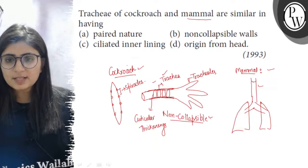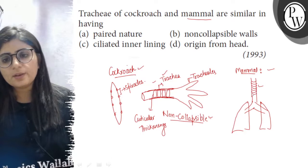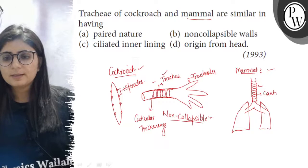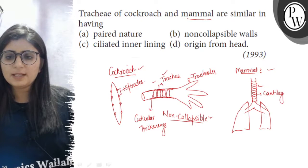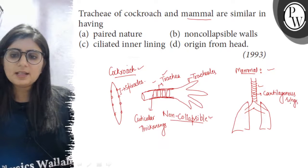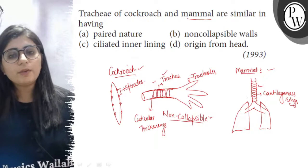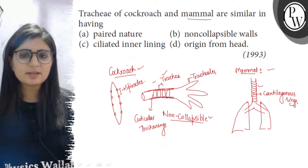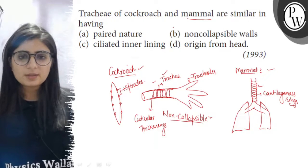In case of mammals, these trachea are supported by the rings of cartilages. These cartilaginous rings are made of cartilage, and these rings avoid or prevent the collapsing of trachea when there is no air in them.